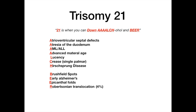Early Alzheimer's disease is critical to know — trisomy 21 confers a much greater risk of Alzheimer's disease earlier in life. The reason is that having three copies of chromosome 21 means more protein contributing to Alzheimer's development. Prominent epicanthal folds are also a key finding, and we've already discussed Robertsonian translocation.